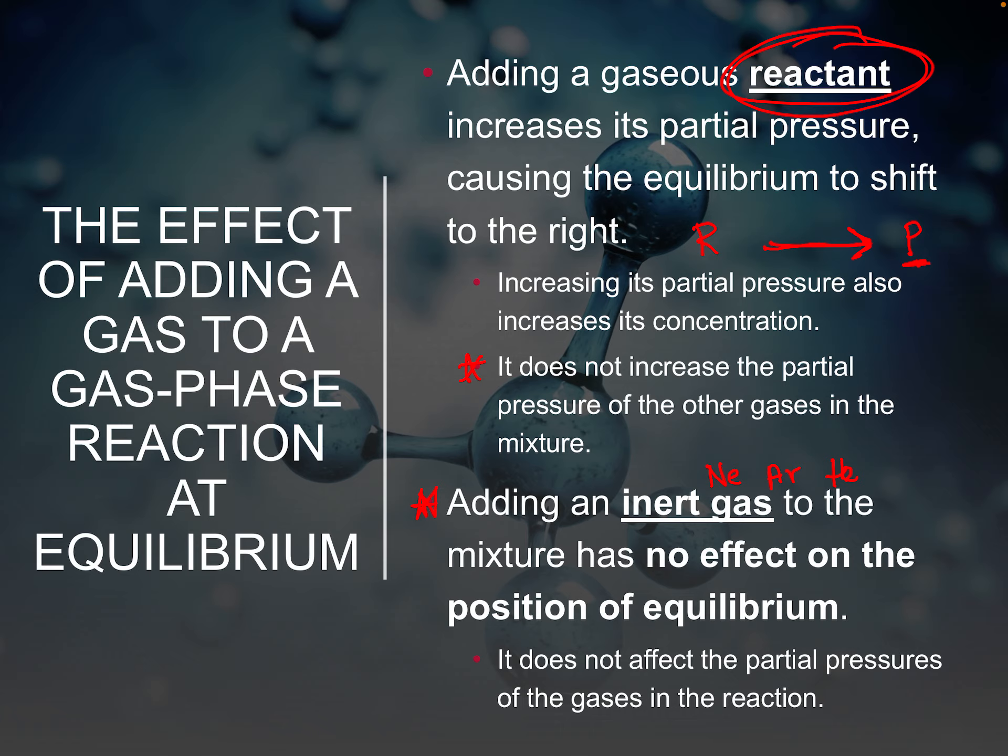Adding an inert gas will increase the total pressure in the container, but it doesn't affect the partial pressures of the reacting gases, which are what matter. So adding an inert gas has no effect on the position of the equilibrium — it's not going to shift left or right. Those inert particles just hang out.